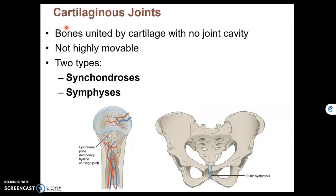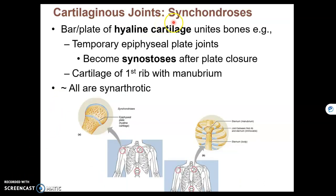Our second structural classification is cartilaginous. Cartilaginous joints come in two types: a synchondrosis and a symphysis. A synchondrosis is when hyaline cartilage fills in the space between two bones. As an infant or child, we have epiphyseal plates, meaning the epiphysis is separated from the diaphysis by hyaline cartilage — this is a synchondrosis. The only other area where we see this is where the first rib connects with the manubrium of the sternum. Those are the only two synchondroses in the body.